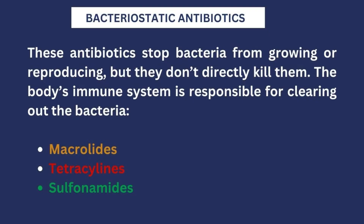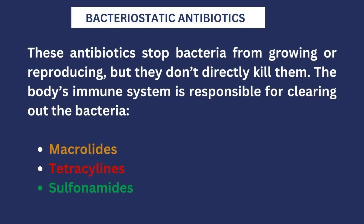Bacteriostatic antibiotics stop bacteria from growing or reproducing — they don't directly kill them. The body's immune system is then responsible for clearing out the bacteria once these antibiotics have done their work. There are three major classes of bacteriostatic antibiotics: macrolides, tetracyclines, and sulfonamides.